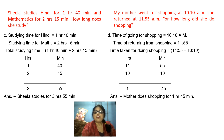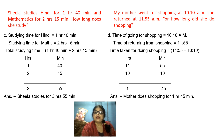Next question: My mother went for shopping at 10:10 a.m. She returned at 11:55 a.m. For how long did she do shopping? The time of going for shopping is 10:10 and the time of returning from shopping is 11:55. You subtract the shopping start time from the returning time, then you will get the answer. Write: 11 hours 55 minutes minus 10 hours 10 minutes. Write in the respective columns and subtract. After subtraction, you get 1 hour 45 minutes. So in the answers column, write: mother does shopping for 1 hour 45 minutes.